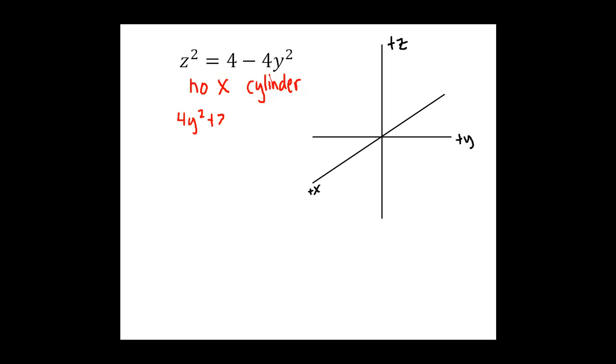4y squared plus z squared equals 4, and then if we divide through by the constant term, we get y squared over 1 plus z squared over 4 equals 1. So that's an ellipse that crosses through the y axis at plus and minus 1, and the z axis at plus and minus 2.